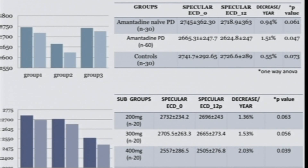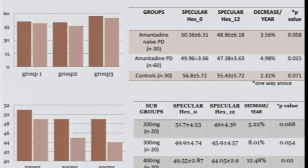When endothelial cell parameters were evaluated among groups and subgroups, there was a greater decrease in endothelial cell density in Parkinson's disease patients on amantadine — 1.51% over a span of one year. Among the subgroups, those on greater dosage had greater decrease, with the 400 mg group showing a 2.03% decrease. Similar changes were seen in hexagonality and coefficient of variation, with amantadine patients showing greater decrease in hexagonality and greater increase in coefficient of variation, with increased dose subgroups showing the major change.